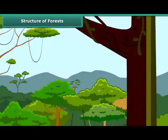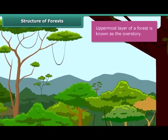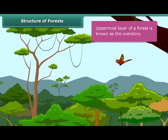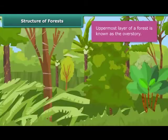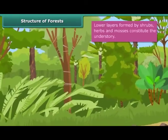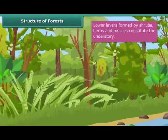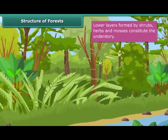A forest has a layered appearance and it has trees of different heights. While the uppermost layer is known as the overstory, the lower layers formed by shrubs, herbs and mosses constitute the understory.